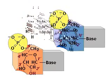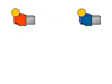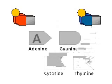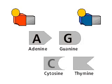The four bases found in DNA are adenine, guanine, cytosine, and thymine. These are abbreviated A, G, C, and T.